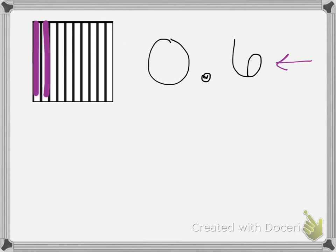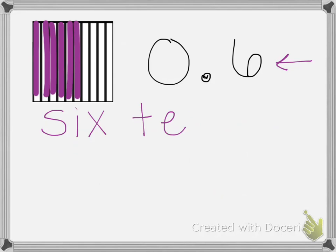So 1, 2, 3, 4, 5, 6. So we've shaded in our picture to show 6 tenths. We can write that number in word form, 6 tenths.